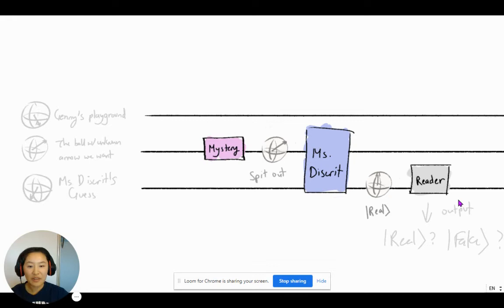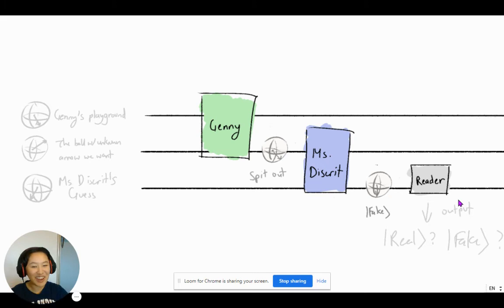And we do the same with the mystery qubit, mystery ball with unknown arrow. And so we will take these two circuits, Mrs. Discrit often adjusting her tunable knobs to guess correctly, and then Jennie will adjust his tunable knobs to be able to fool her. And this war, well, this goes back to our original question. Will this war go on forever? Or will one of them win? And there actually is a definite answer.